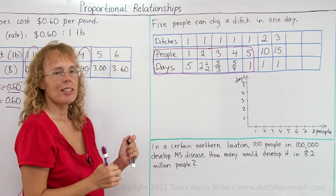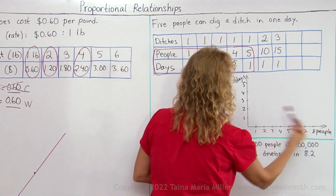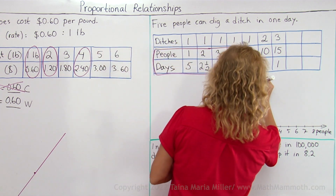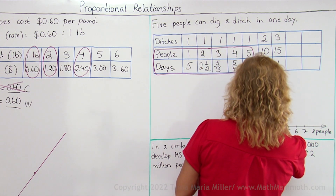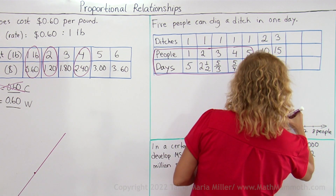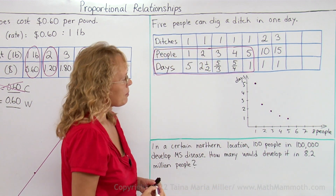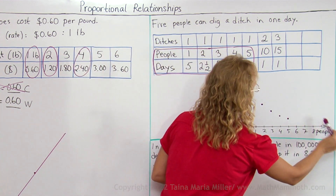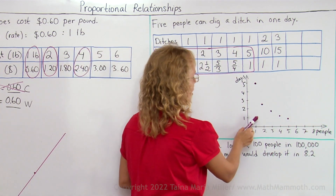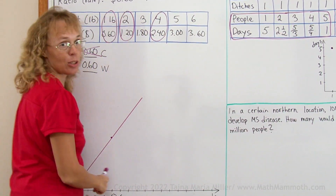This is where the people and days were not in proportion, and I will plot those here on the people-and-days coordinate grid. We have one person and five days up here, then two people and two and a half days, three people would be one and two-thirds. This is a little over one and this is exactly one. And these are going downhill like that. If it was a proportional relationship, you would have a straight line through the origin going somewhere, like we had here. And you've seen other examples too.